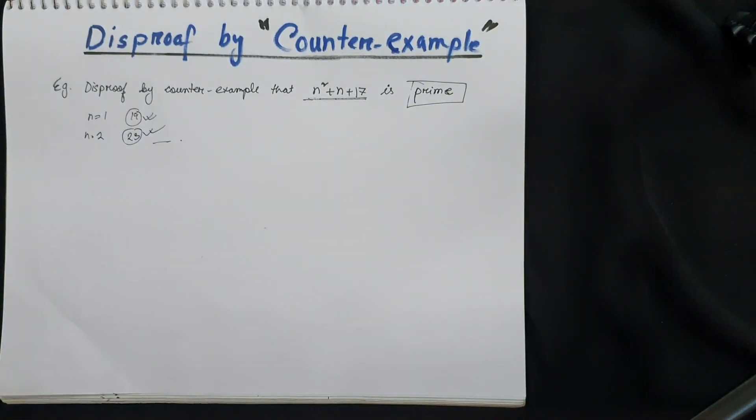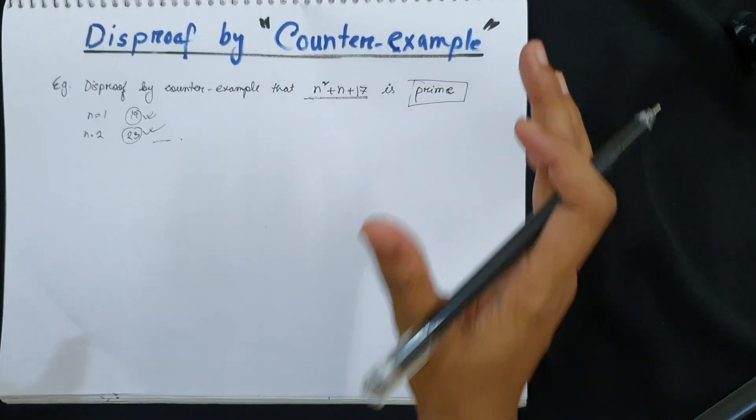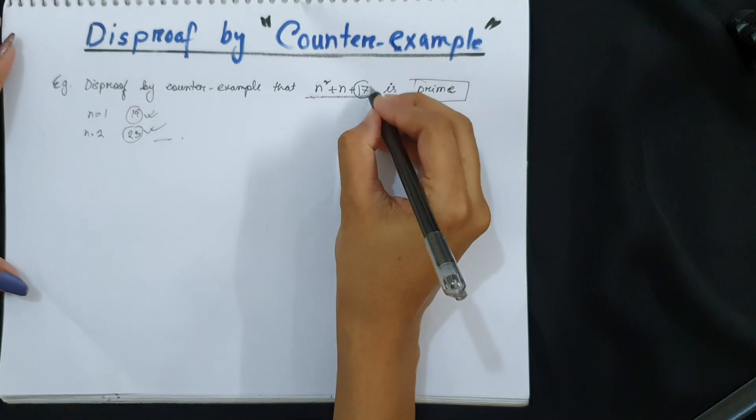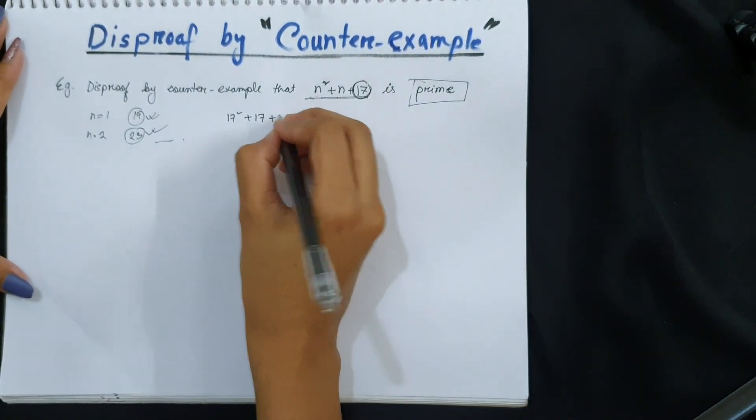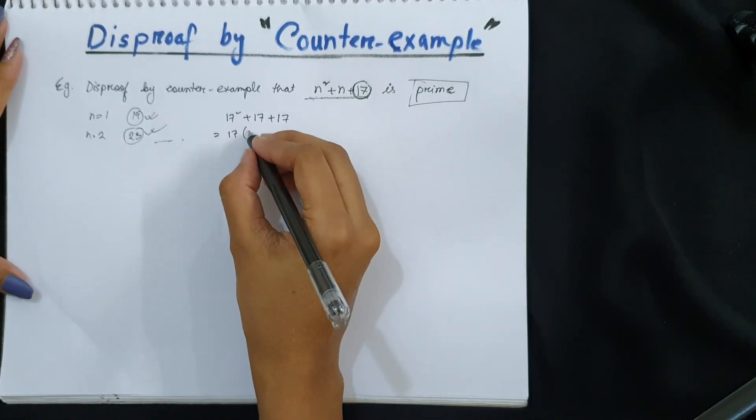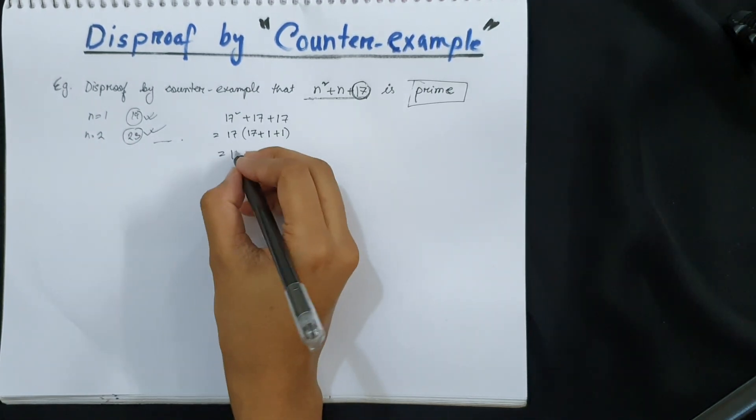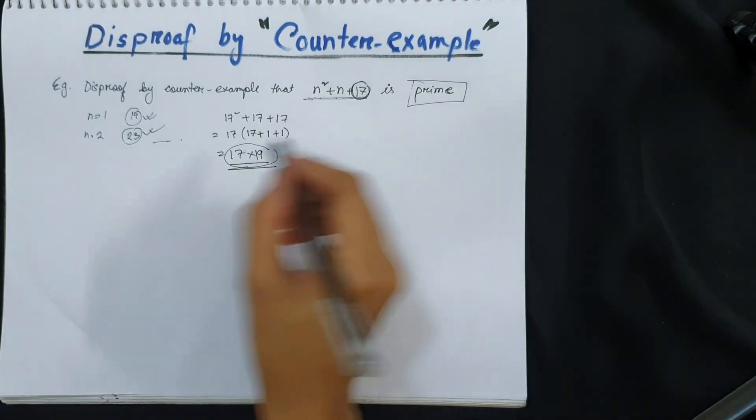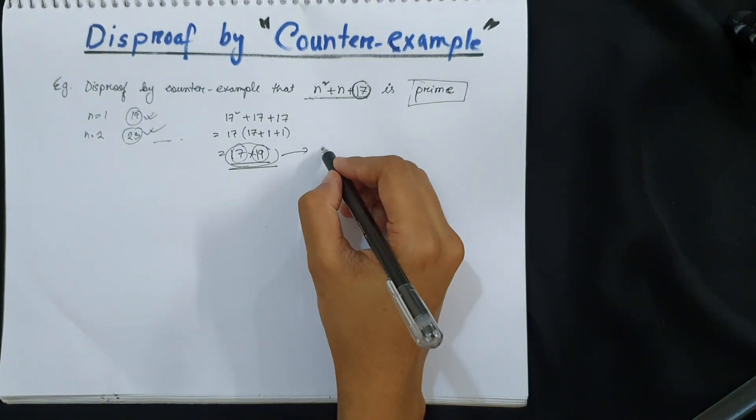So we need to find a value for which this whole value does not result into something which is a prime. So if we choose 17, it becomes 17² + 17 + 17. So factorizing 17 out of it, 17(17 + 1 + 1), so 17 × 19. So since this term is a multiple of 17 and 19, the result is not a prime number.